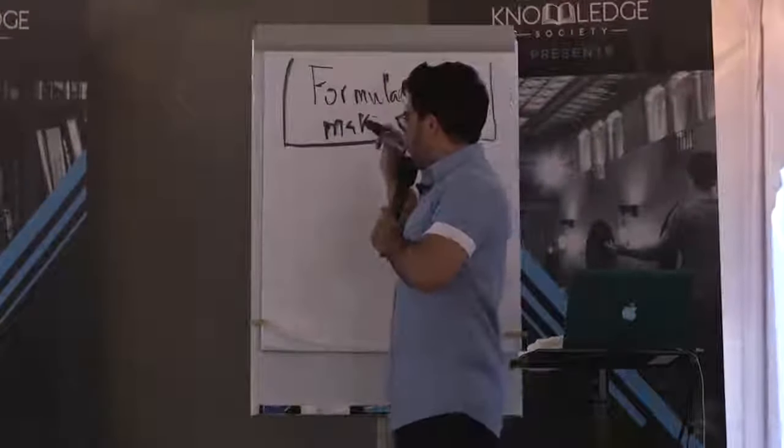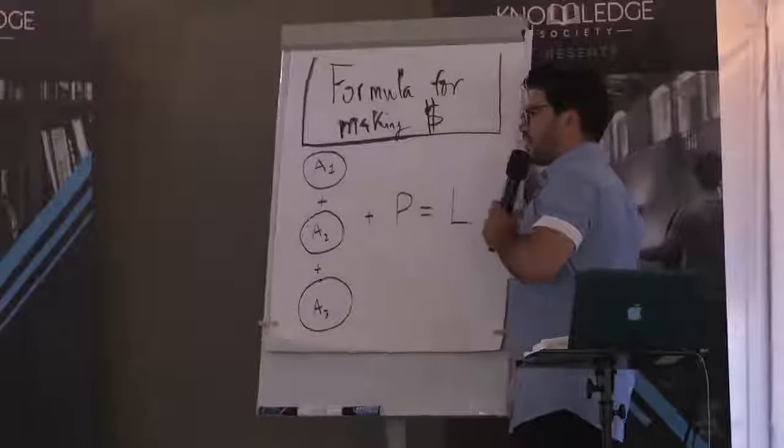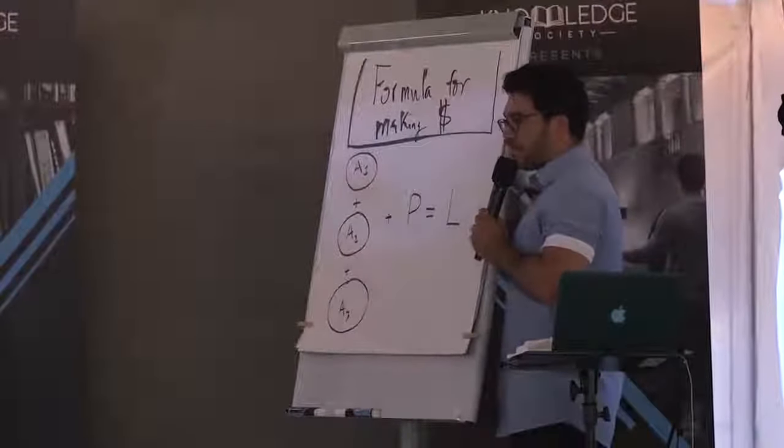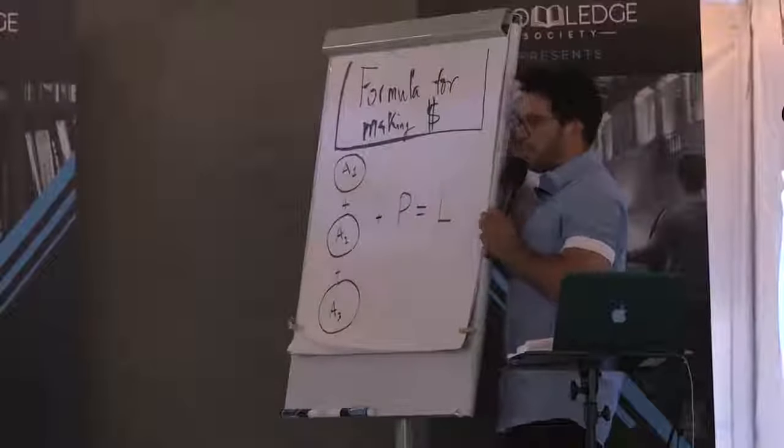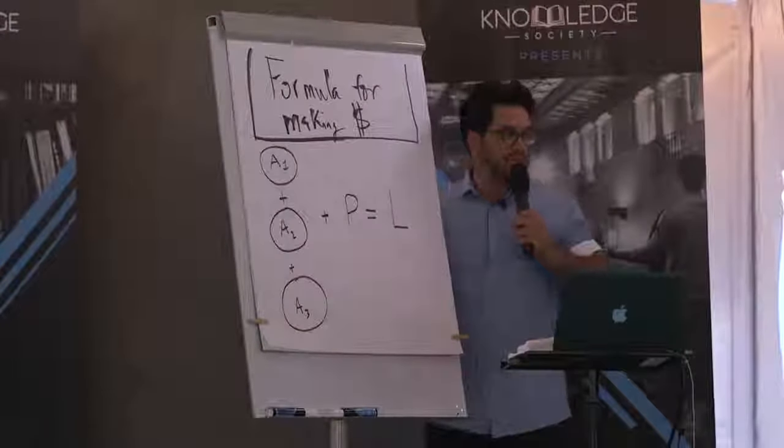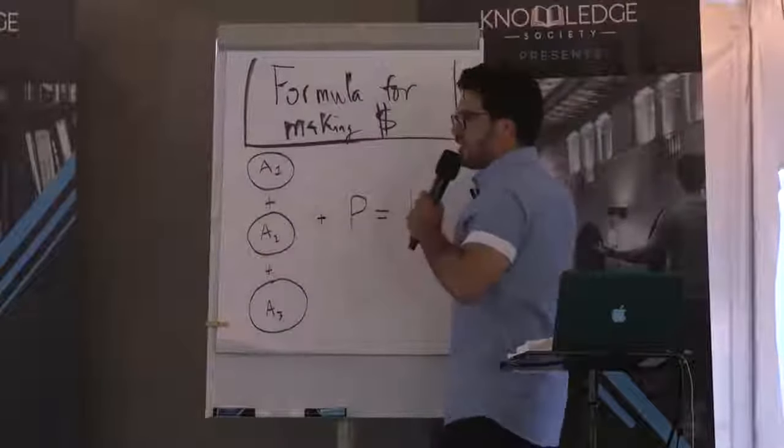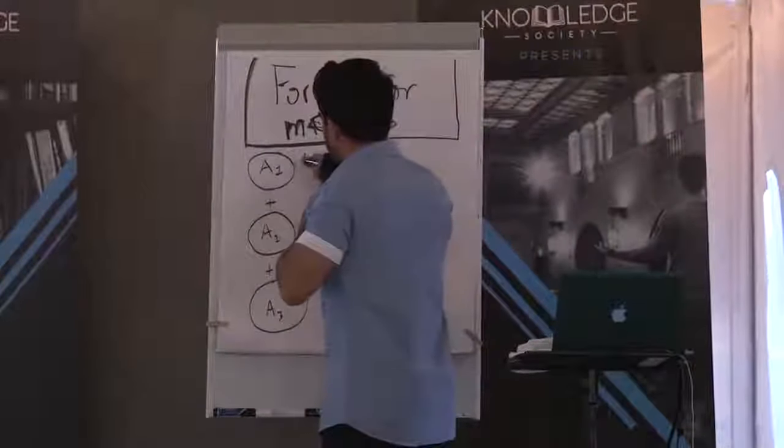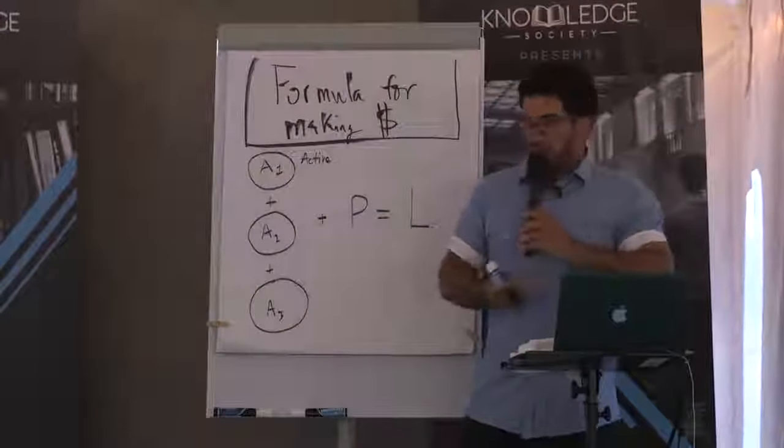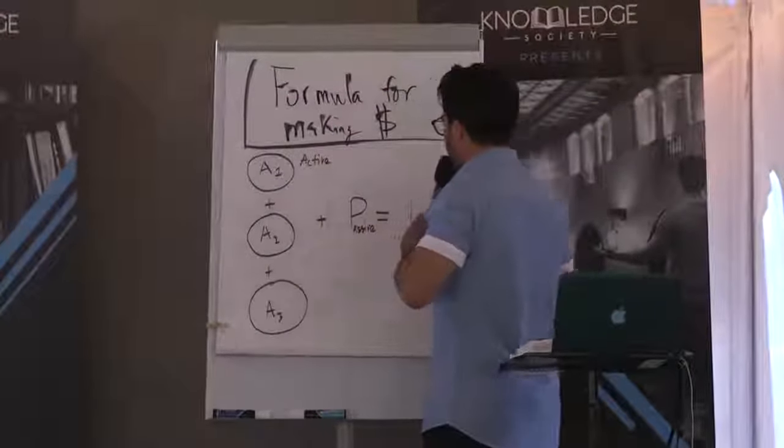So here's the big picture formula. You can write this down. You got A1 plus A2 plus A3 then you add on top of that P and that gives you L. This way everybody got it? So what this is, A stands for active.